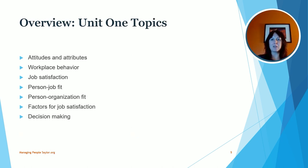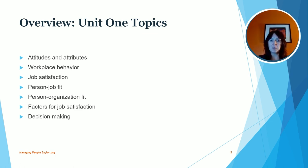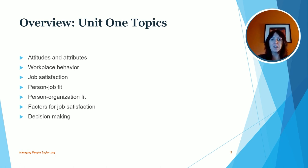On this slide, we're going to take a look at an overview of the topics we'll be discussing in unit one. The first is attitudes and attributes, then workplace behavior. We'll talk about job satisfaction and what makes a job satisfying, person-job fit, person-organization fit, factors for job satisfaction, as well as decision-making.